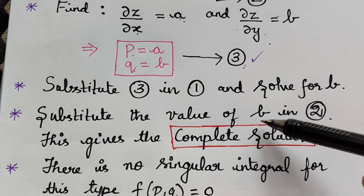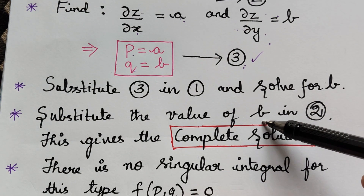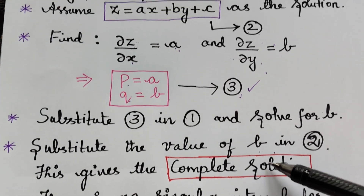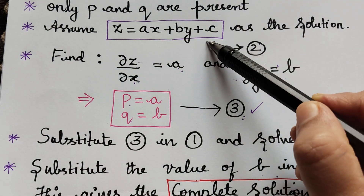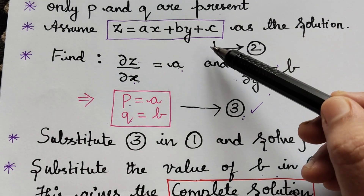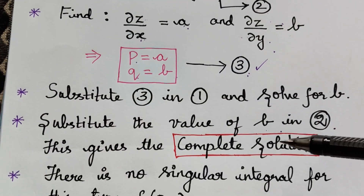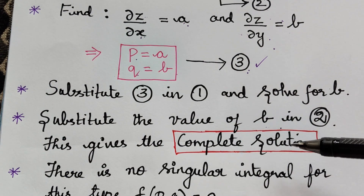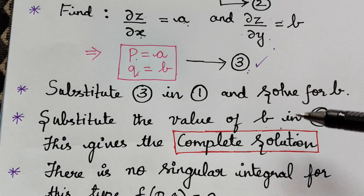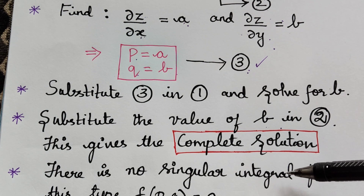After finding the value of b, we have to take the value of b and substitute it into equation 2, which will give us the complete solution — also known as complete integral. You will understand this better when we solve the problem.